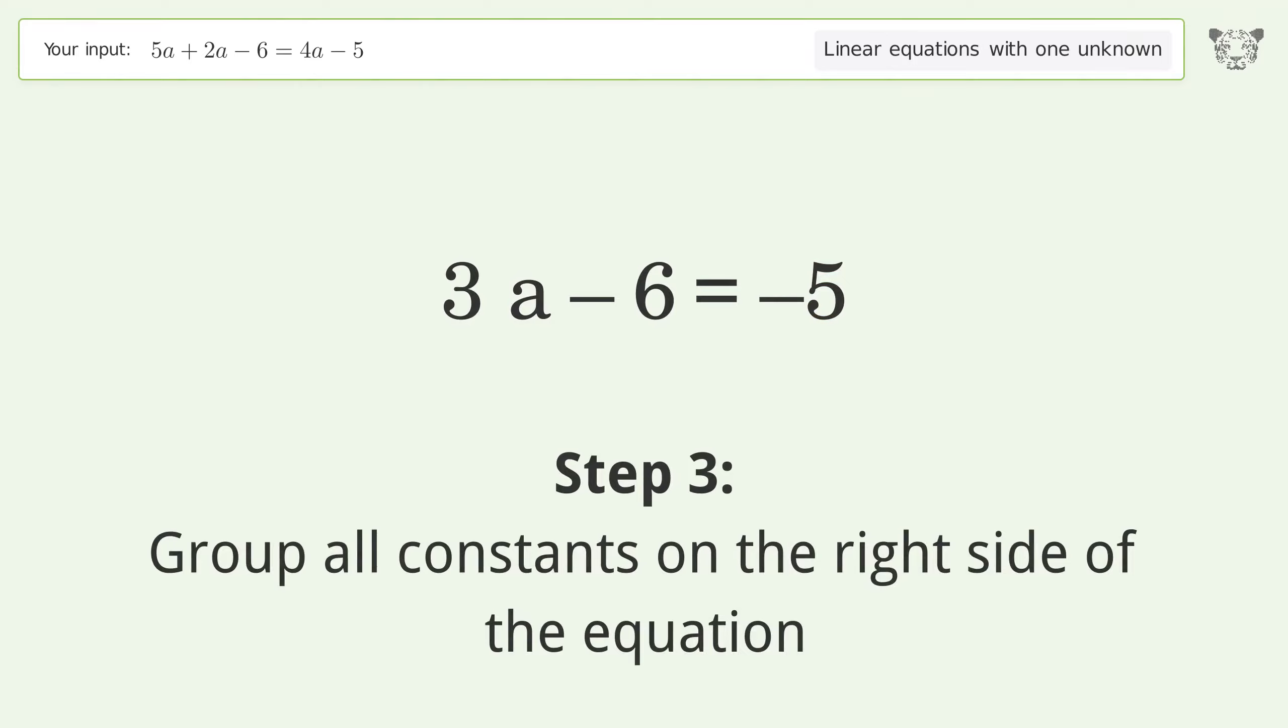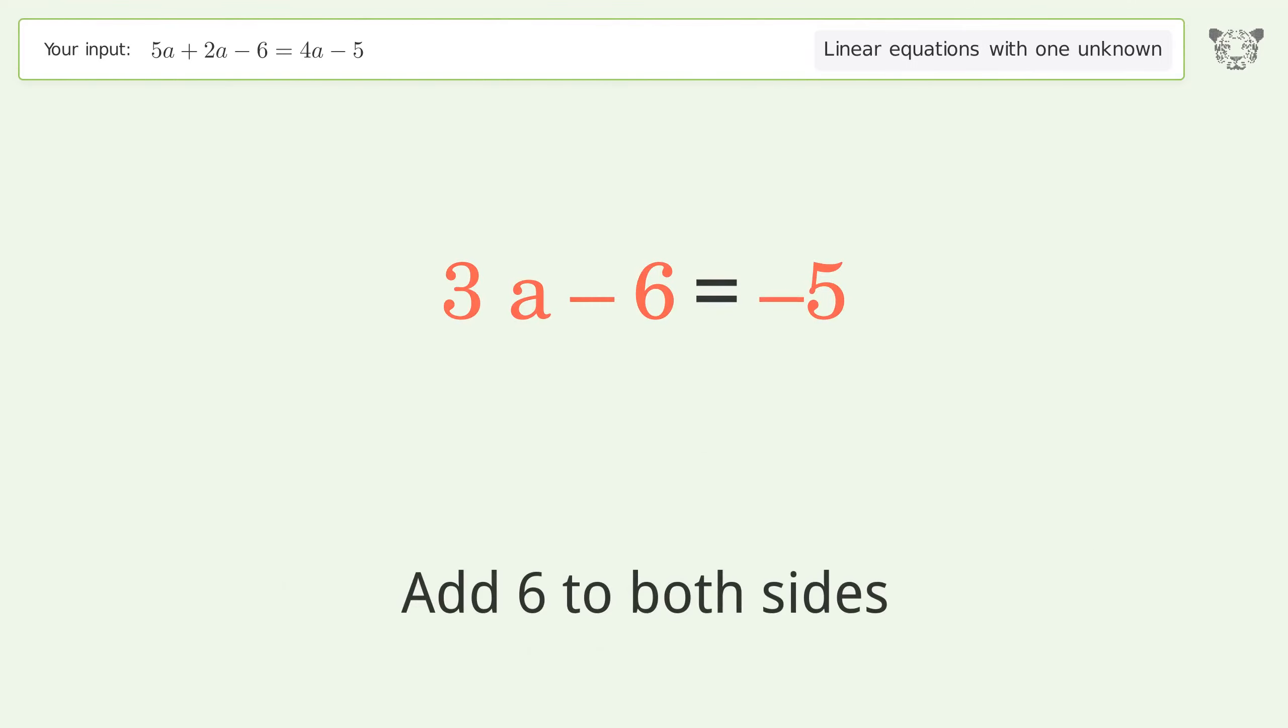Group all constants on the right side of the equation. Add 6 to both sides. Simplify the arithmetic.